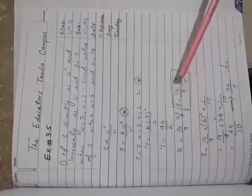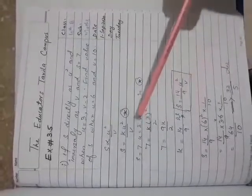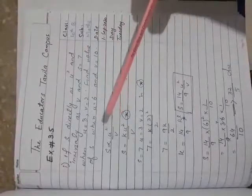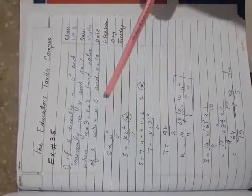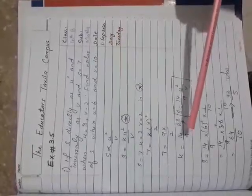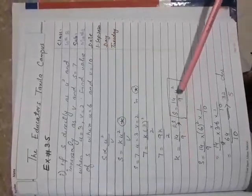So the equation is s is equivalent to 14 by 9 times u square by v. Now to find values of s when u is equivalent to 6 and v is equivalent to 10, and k is equivalent to 14 by 9.